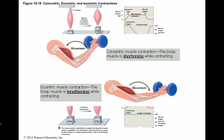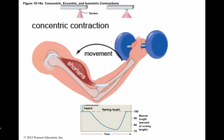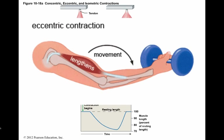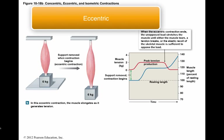Lifting an object off the desk, walking, and running involve isotonic contractions. Two types of isotonic contractions exist: concentric and eccentric. In a concentric contraction, the muscle tension exceeds the load and the muscle shortens. In an eccentric contraction, the peak tension developed is less than the load and the muscle elongates due to the contraction of another muscle or the pull of gravity.